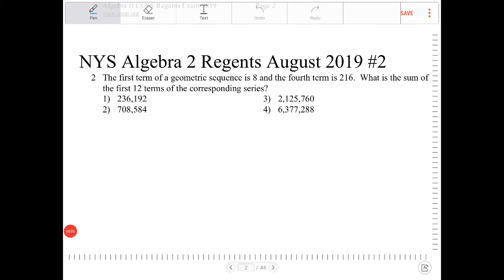The first term of a geometric sequence is 8, and the fourth term is 216. So the first term, so A1 is 8, and A4 is 216.